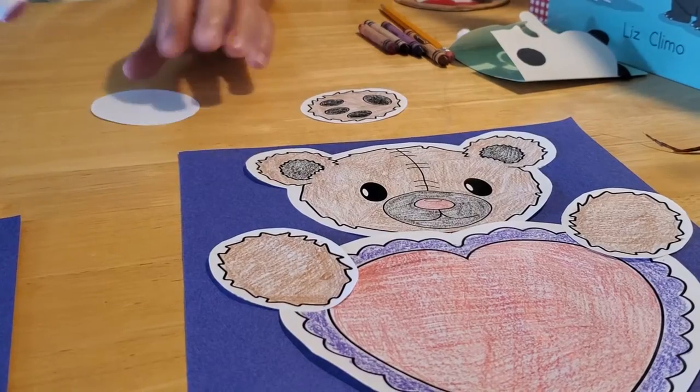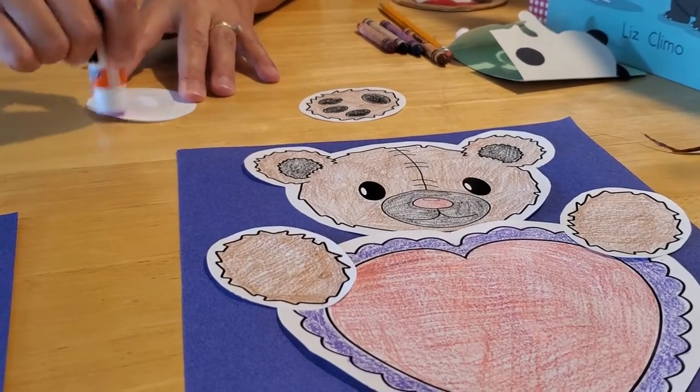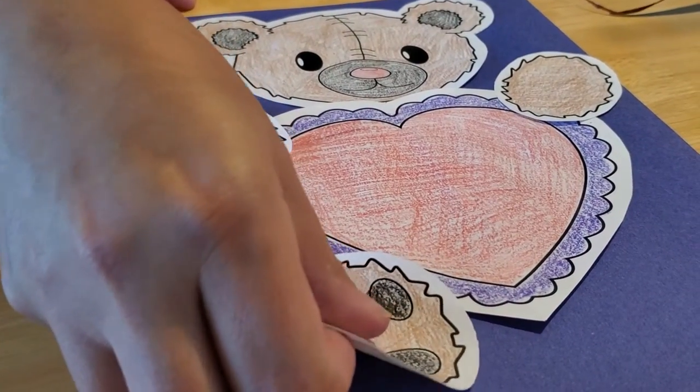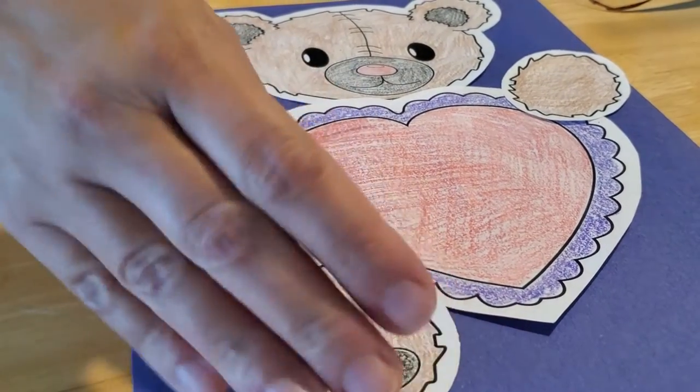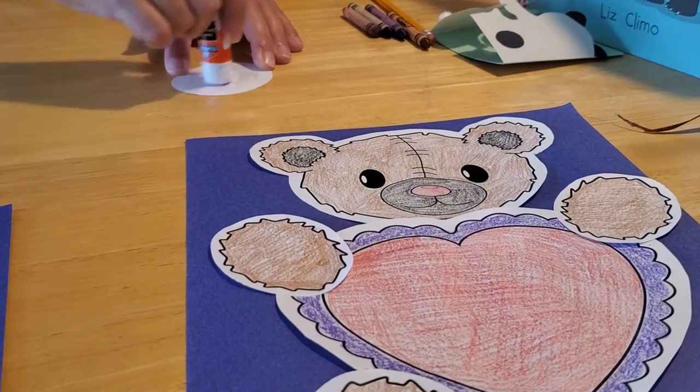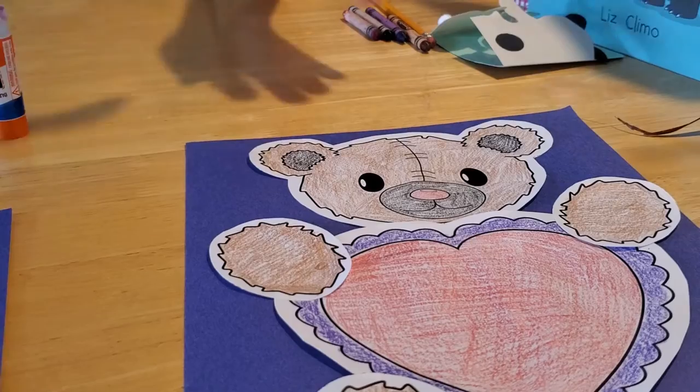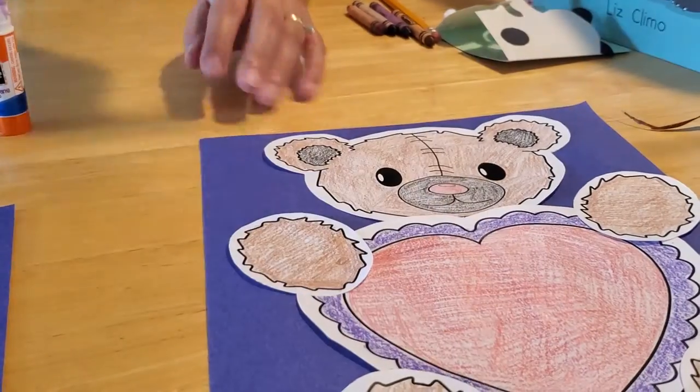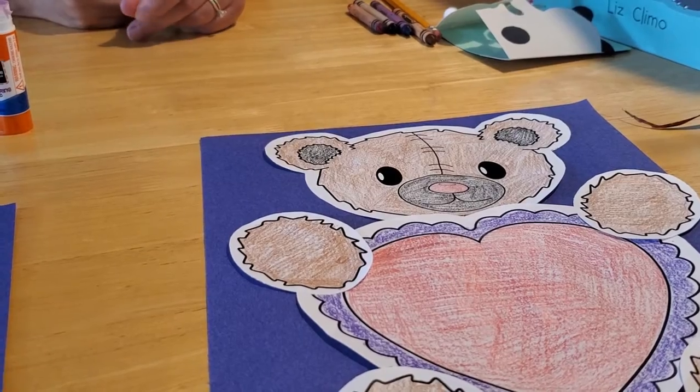And then for his feet, you want to put them kind of on an angle off the bottom so they kind of look like they're just under his body. Make sure you put the three paw pads up on top, and that is how you make a really simple bear card. Isn't that a cute idea?